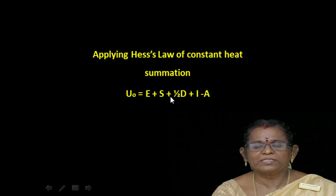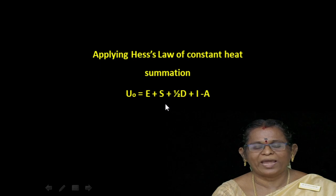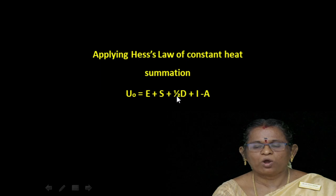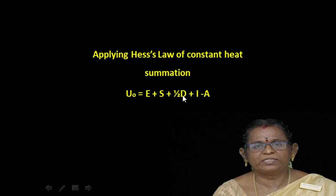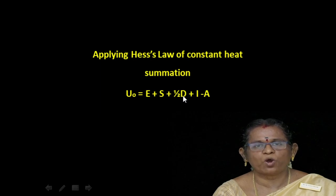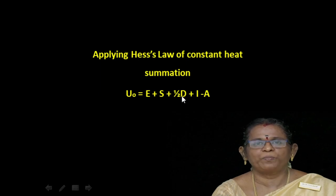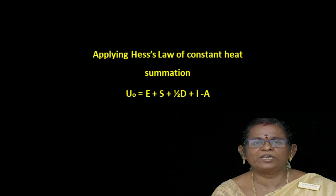Applying Hess's law of constant heat summation, the lattice energy U₀ is equal to: U₀ = E + S + ½D + I − A. The energy released in the single-step formation of the ionic crystal is equal to the energy released in the multi-step process.